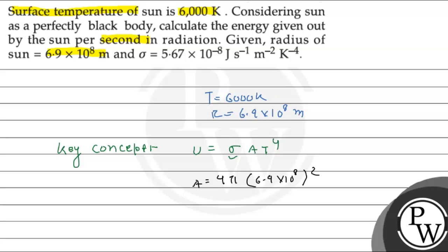So substituting these values, U will be sigma, that is 5.67 into 10 to the power minus 8, into 4 pi into 6.9 into 10 to the power 8 squared, temperature is 6000 to the power 4.